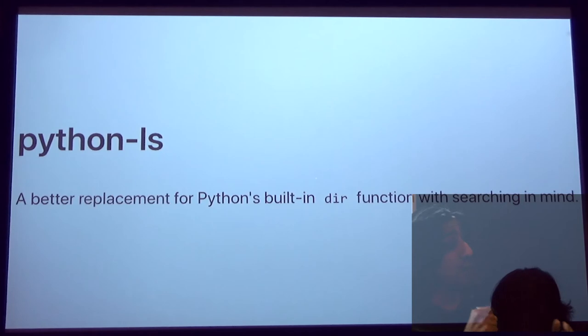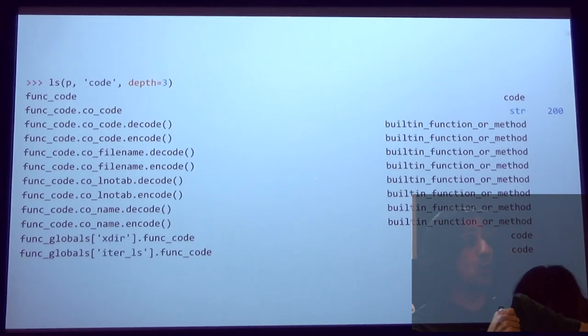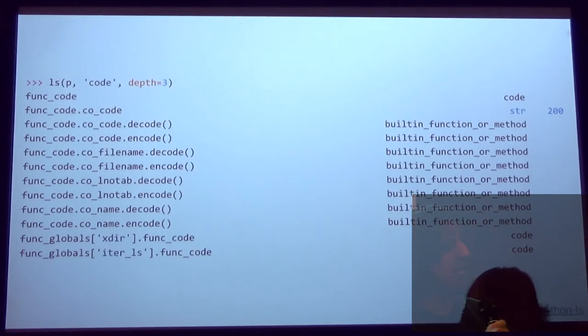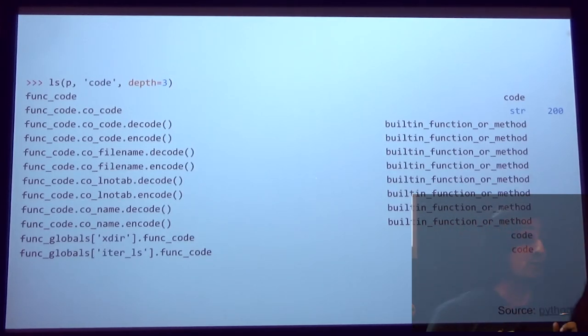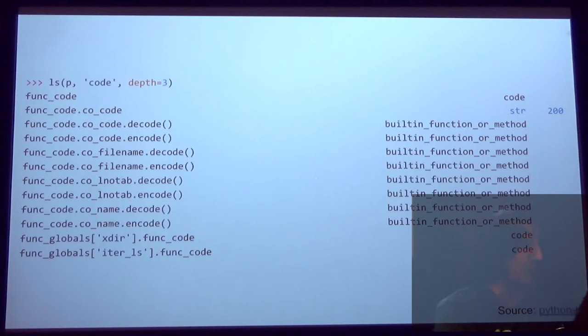Python-LS is a better dir. It's dir with search built in. So here we have the ls method. We're going to pass in an object called p. I'm going to have the attribute I'm searching for, code. And I'm going to go three levels deep in my object. So that's my depth I'm setting right there. So you can see here we have code. We have decode, which contains the word code, and just other things that are along the same lines for those attributes.